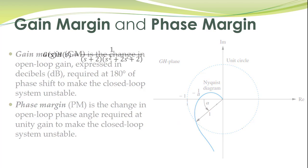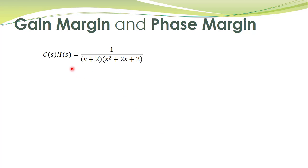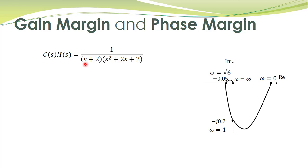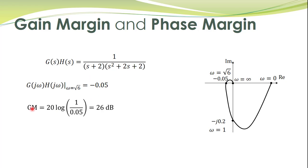Consider a closed loop system with a given loop gain transfer function whose polar plot has already been sketched. At the 180-degree phase point, the magnitude is 0.05. The gain required to shift this point to the critical point is 1/0.05, so the gain margin equals 20 log(1/0.05) = 26 dB.